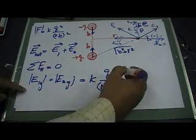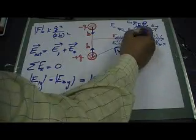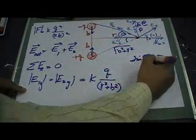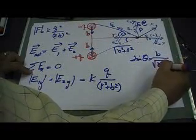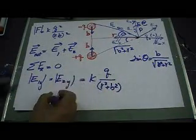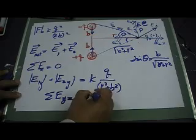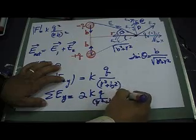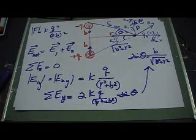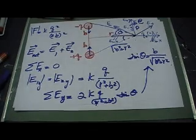The only remaining component is along the y-direction. E1y equals E2y equals KQ divided by (R squared plus B squared) — the distance squared is R squared plus B squared. I then multiply by sine theta, where sine theta equals B divided by the square root of (B squared plus R squared). So the total electric field along y is 2KQ divided by (R squared plus B squared), multiplied by sine theta. The x-axis components cancel and the y-axis components add up.